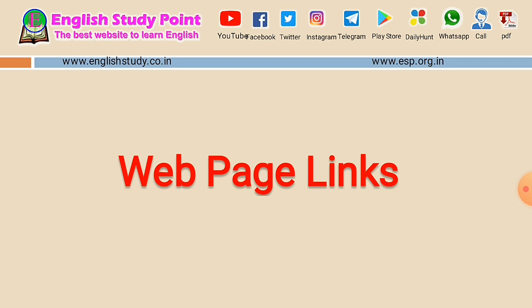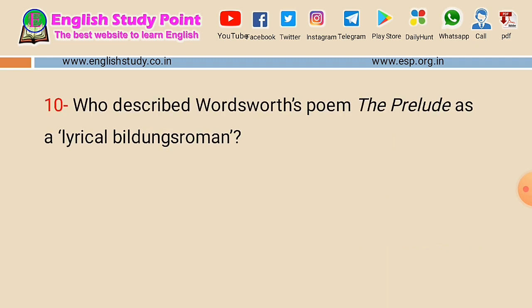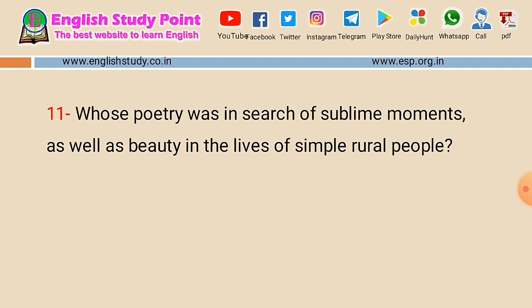Question number ten: who described Wordsworth's poem the Prelude as a 'lyrical bildungsroman'? You have to give the name of the critic who described the Prelude in this way — as a novel-like lyrical poem. The answer is Coleridge. This is a very important question.